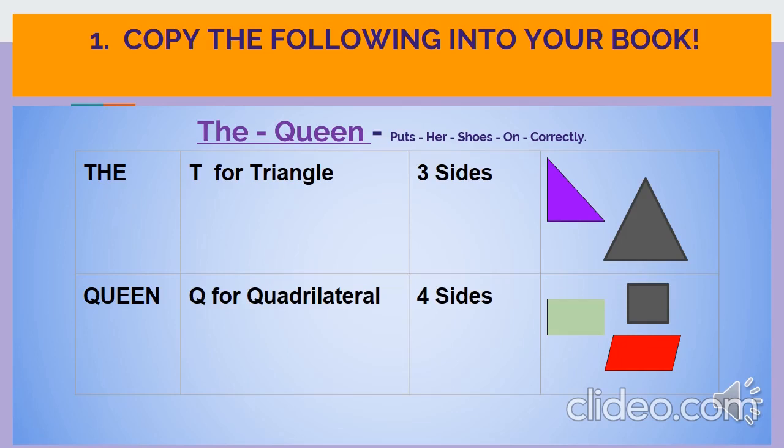The queen puts her shoes on correctly. I'm going to focus on the first two words: The queen. The letter T stands for T in triangle, which is a shape with 3 sides. The letter Q in queen is for quadrilateral, which is a shape with 4 sides. And that could be squares, rectangles, rhombus, trapeze. I wonder if you can find any others. I'll give you a moment to copy down these notes.